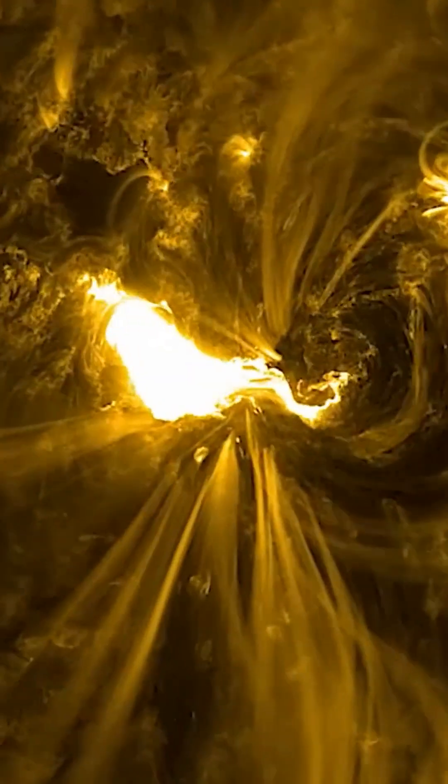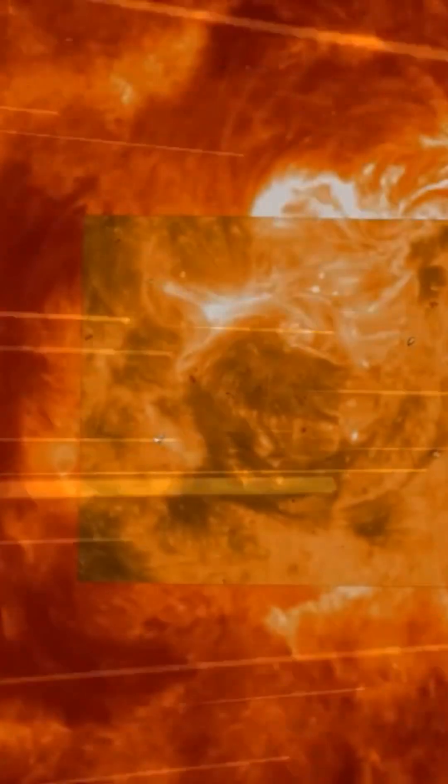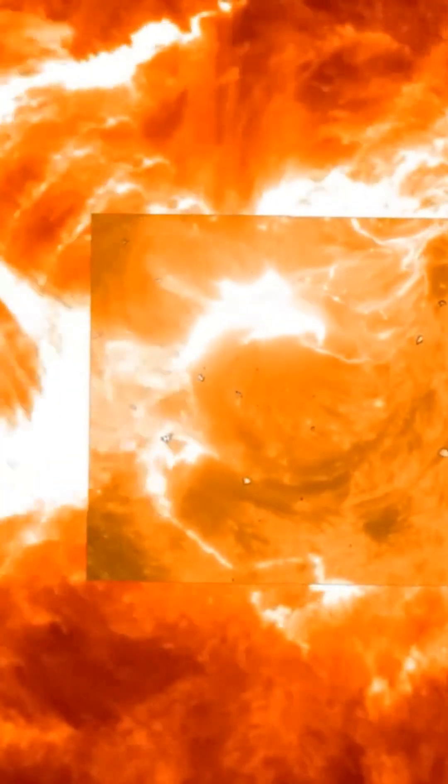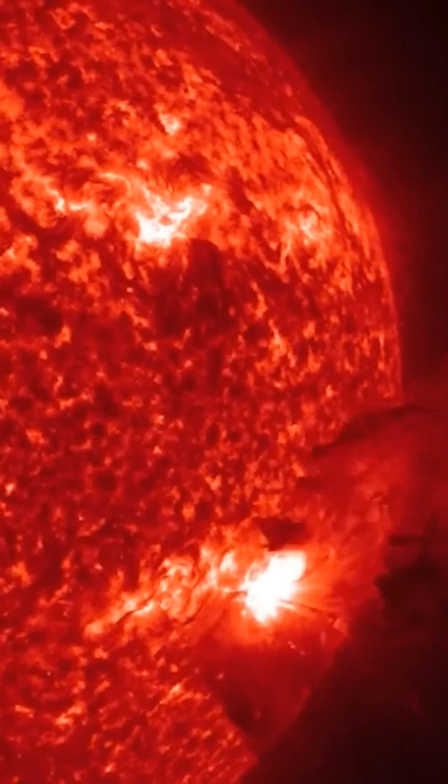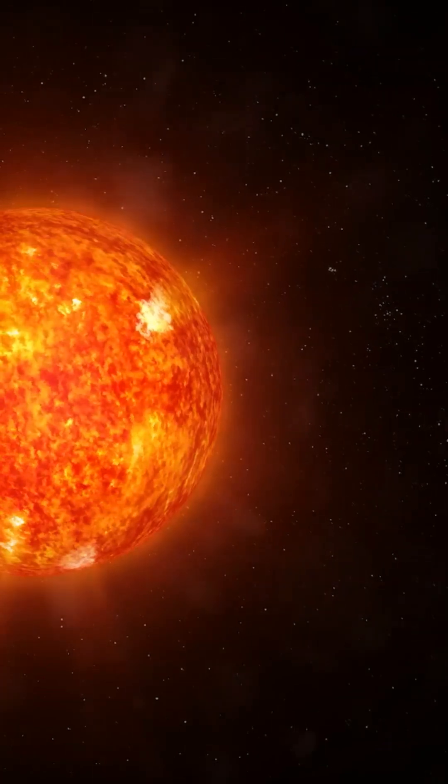From this extraordinary vantage point, the Sun appeared to the probe as a massive blazing sphere of fire, dominating 13 degrees of its field of view, akin to holding an orange at arm's length, but with a brilliance so intense it would blind human eyes instantly.